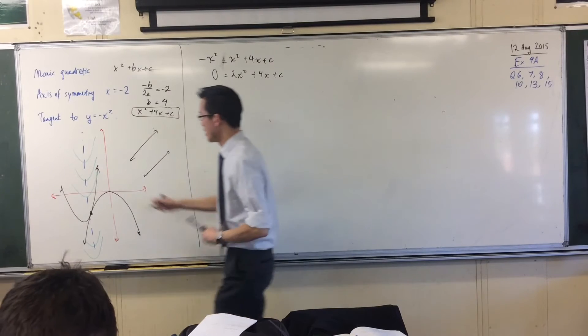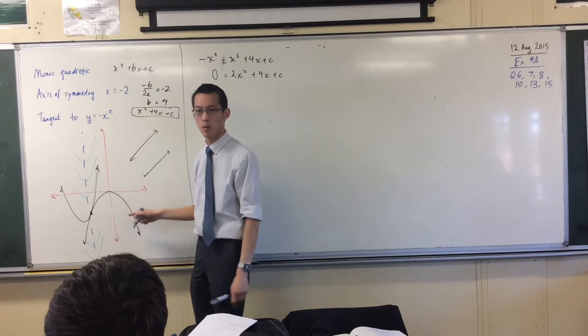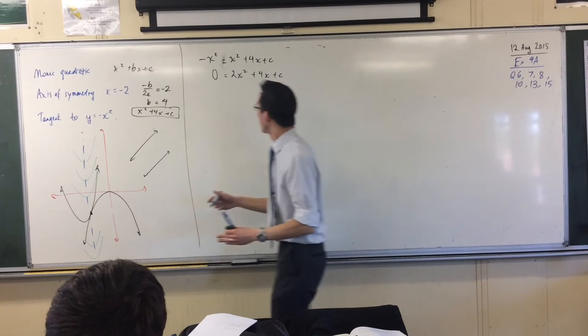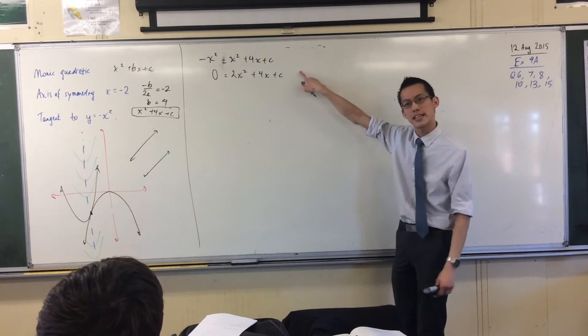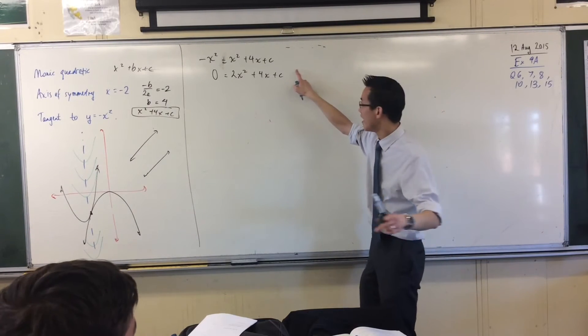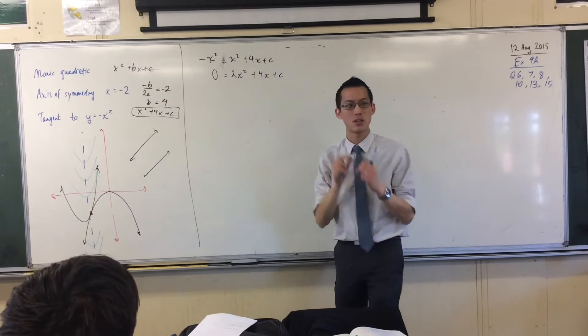So, for instance, this green option up here, the very highest one, it never intersects with y equals minus x squared. So if it never intersect, what does that mean about this particular quadratic here? Less than zero. It has no solutions, and the way that I know it has no solutions is the discriminant would be negative.